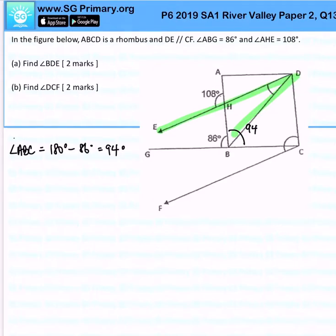After which I find angle ABD and that will be 94 degrees divided by 2 giving me 47 degrees. It's a bisector, it cuts. Because in a rhombus, if you have a diagonal line it cuts the angle into half.